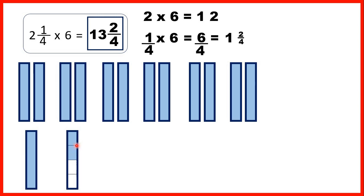Notice that 2 quarters is the same as 1 half. If we keep the same amount of the fraction bar shaded but divide it into 2 pieces rather than 4, you can see that 2 quarters is the same as 1 half. So sometimes you can simplify your fraction, and we could have written 13 and 1 half instead of 13 and 2 quarters. But most of the time you'll still get the mark if you leave the fraction unsimplified.